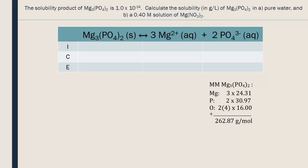For part B, we will use another ICE table and the molar mass. Again, a certain quantity of ions will dissolve into the solution. However, this time there are already 0.4 moles per liter of magnesium in the solution. The nitrate ions of Mg(NO₃)₂ have no influence on the solubility of our compound.